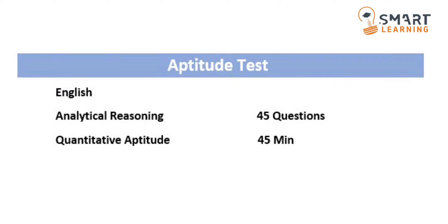The first round is the aptitude test. In this aptitude test there are three subsections: the first section is English, the second section is analytical reasoning, and the third section is quantitative aptitude. The total number of questions for all three sections is 45 questions and the time duration is also 45 minutes — each question carries one minute. There is no negative marking for this first round.